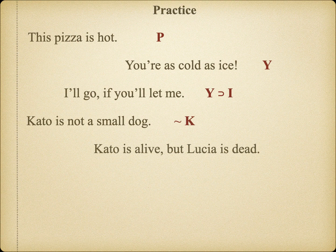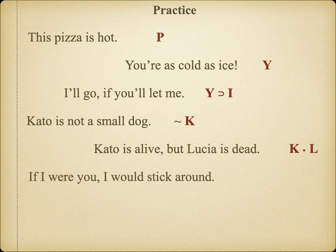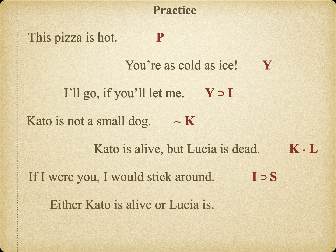In our next example, we have a compound of two statements: 'Cato is alive' and 'Lucia is dead.' The word 'but' is a conjunction, and therefore logically represents the same meaning as the word 'and.' Thus, we get K dot L. 'If I were you, I'd stick around' becomes I horseshoe S. Finally, let's look at a disjunction: 'Either Cato is alive, or Lucia is.' This disjunction is saying that at least one of these two simple statements is true — of course they might both be true — but the logic of the statement tells us that at least one must be true. So this statement becomes K wedge L.